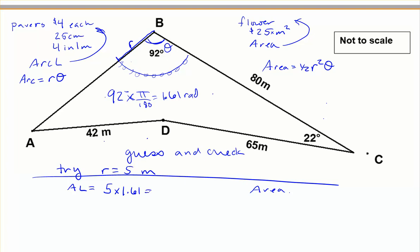When we do this, we get 8.05 meters for our arc length. And for the area, that's 1/2 times 5 squared times 1.61. And in this case, we get 20.51 meters squared. Watching that I put my units on everything here.